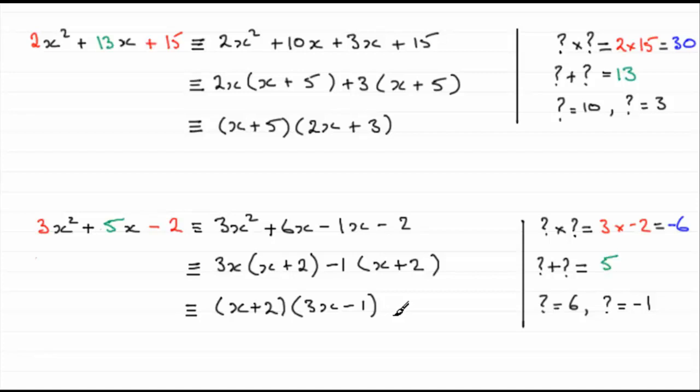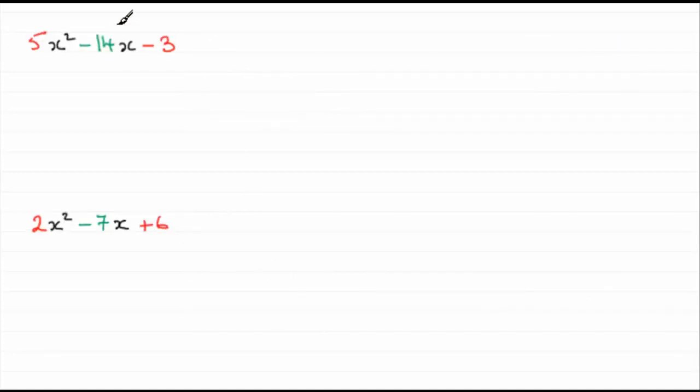Well, I hope you've got the idea there. Now, I've got two more examples for you where I've got two minuses and a minus and a plus. So you might like to try these. So here they are. We've got 5x squared minus 14x minus 3 and 2x squared minus 7x plus 6. Give them a go.